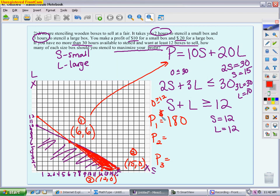Then I do the same thing for the second one. I take this point, (15,0), and I put it into your objective function. I end up getting $150. Then I look at P₃. P₃ is the point (12,0). When I put (12,0) in, I get $120.